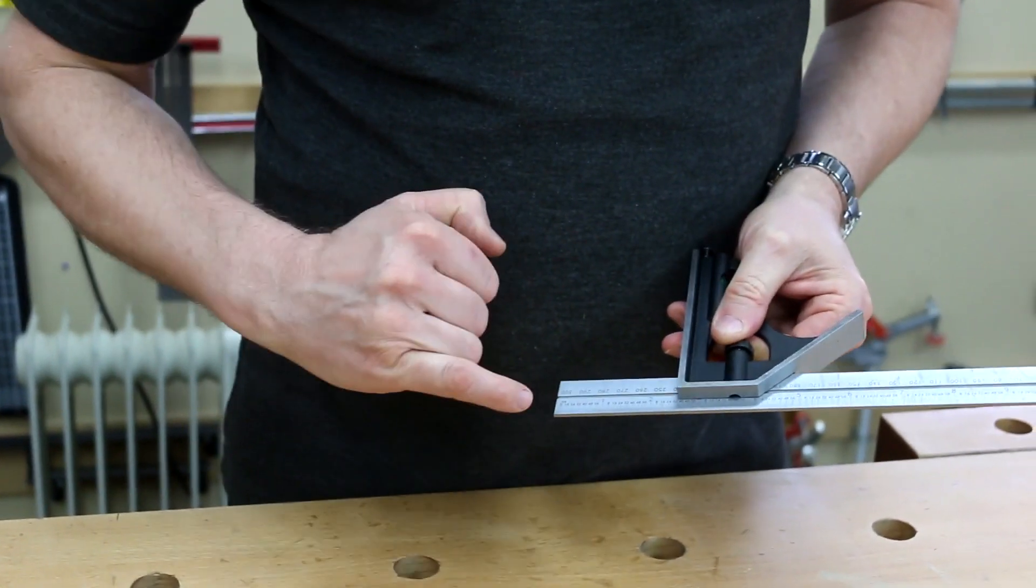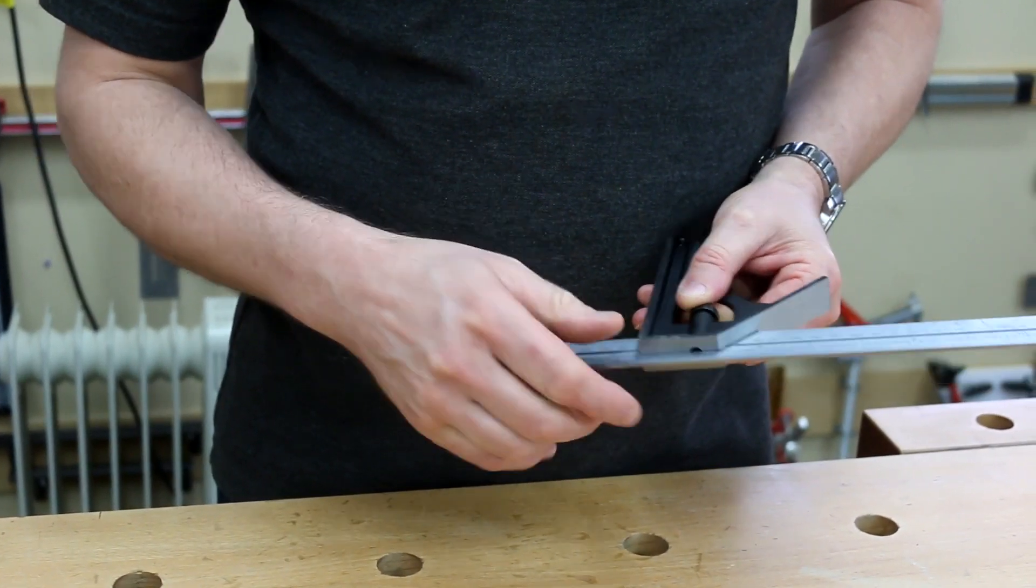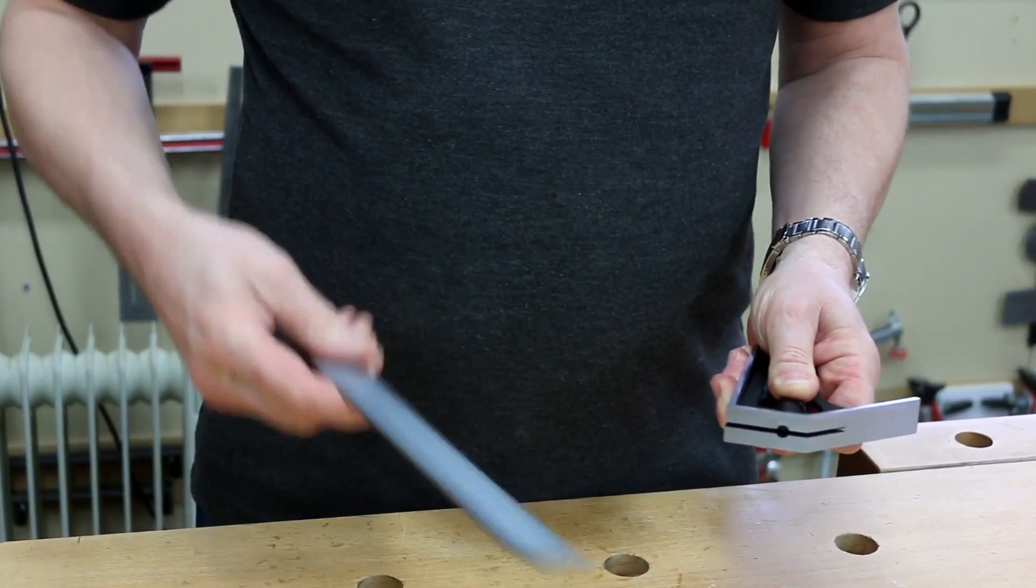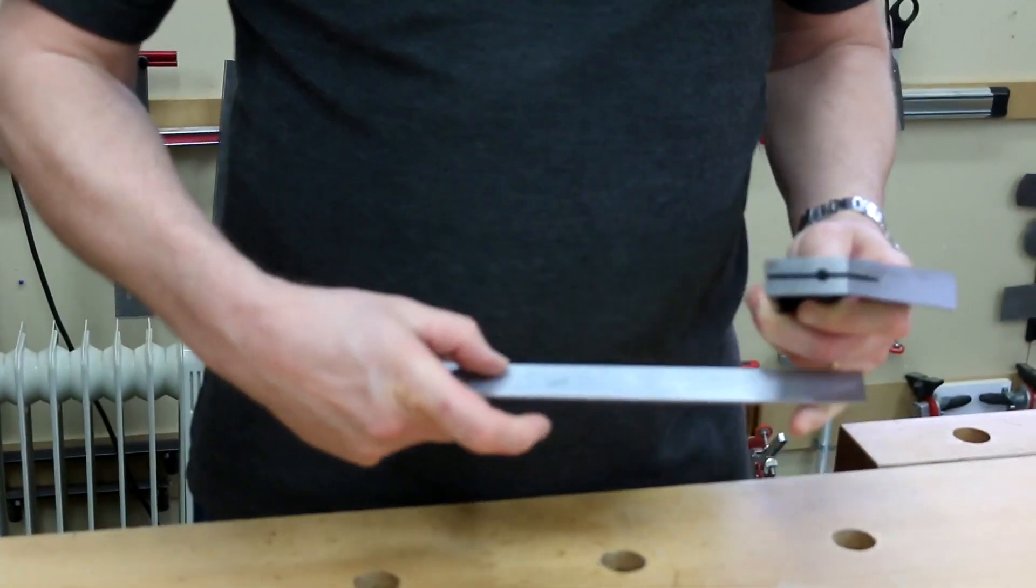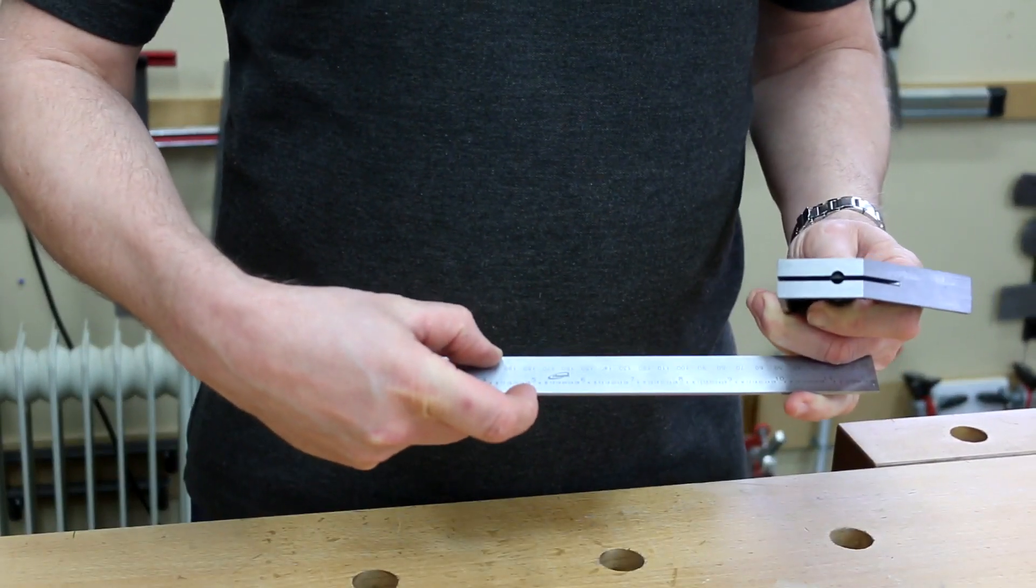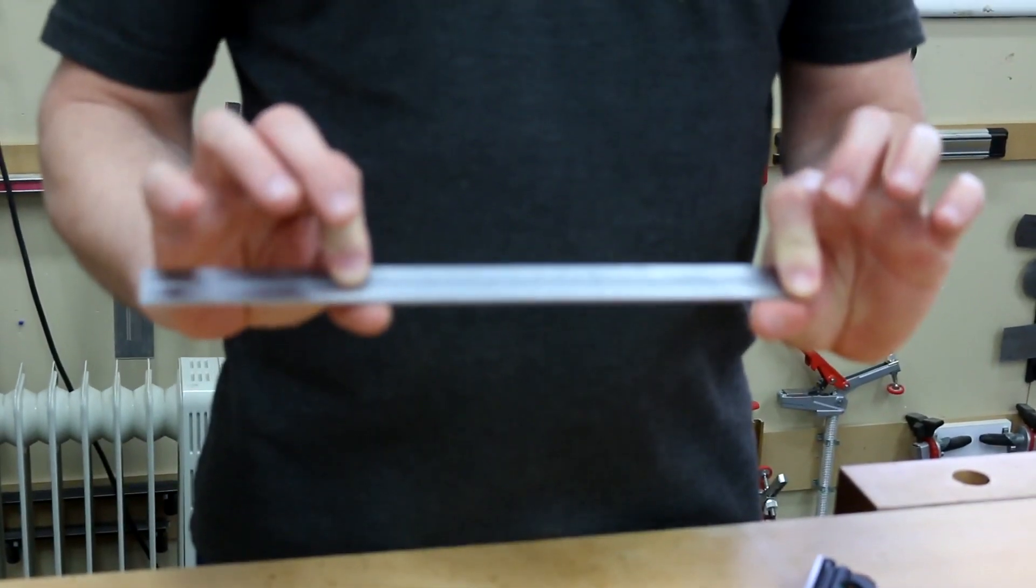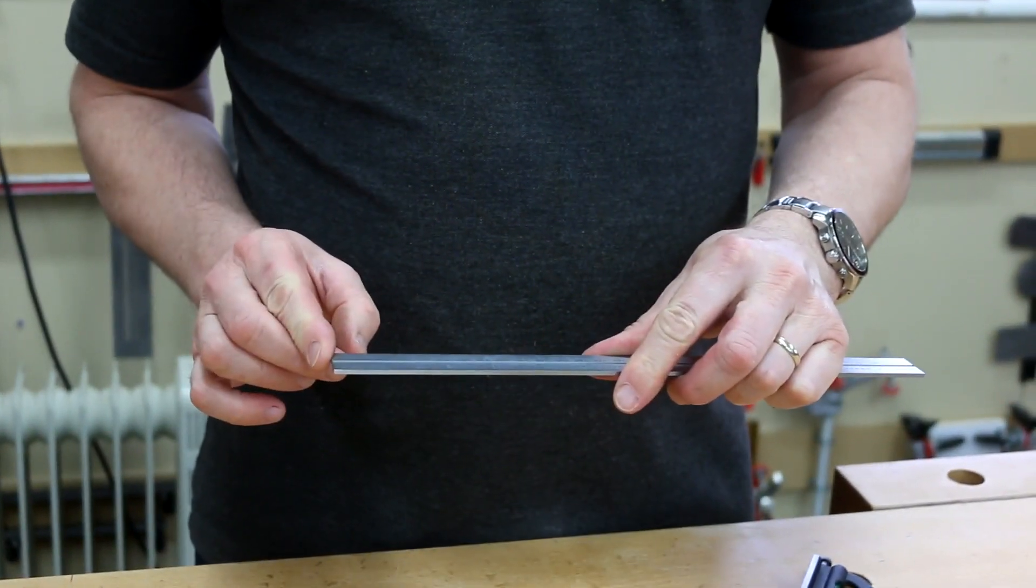This imperial measurement is down to 64ths. If we want to we can take this out, flip it around or flip it over the other way, in which case we've actually got measurements down to 32nds. So really quite adaptable. As a straight edge and a rule it's also pretty damn good. Good clean square ends on it.